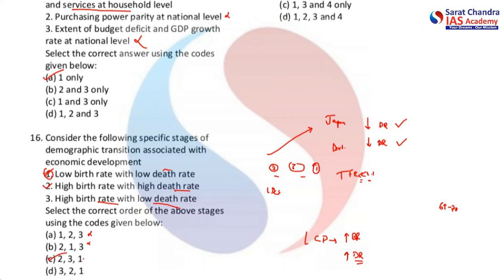The next question about which of the following can aid in furthering the government's objective of inclusive growth has been repeated — as discussed earlier, the answer is D, meaning all one, two, and three.